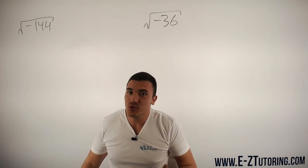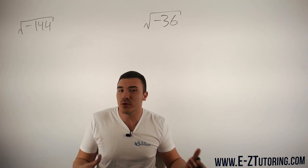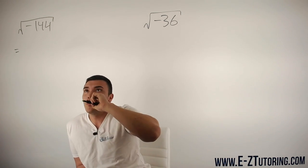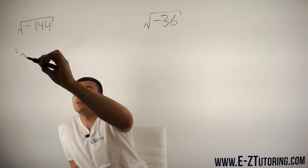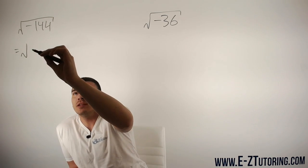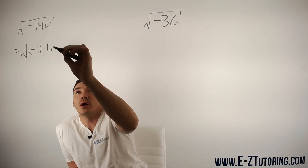I'm first going to do this step by step, then I'm going to teach you a shortcut. For the step-by-step process, you want to split this up into two numbers to make it easier to take the square root. I'm going to split it up into negative one times 144.